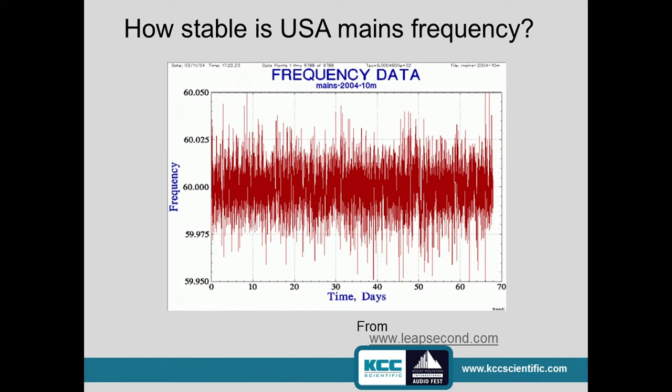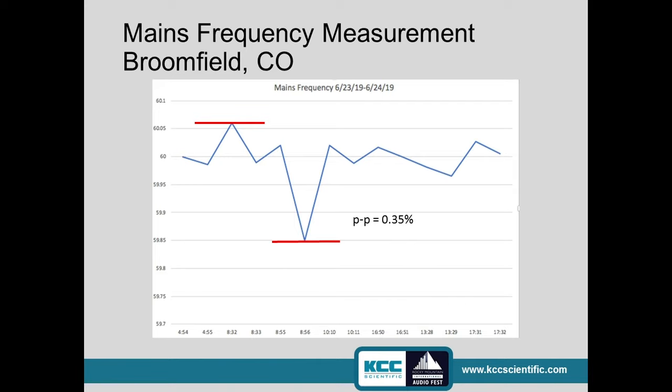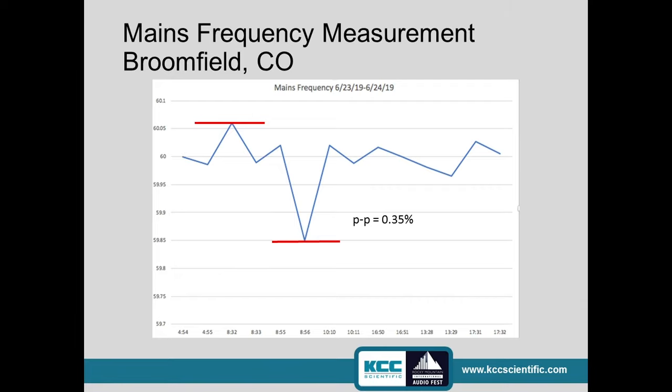So how stable is the frequency in the US? This data is taken from leapsecond.com, which monitored frequency over a period of several days — you can see the peaks and valleys for yourself. I took a few points in Broomfield, Colorado, and over about a 24-hour period I observed about 0.35% peak-to-peak change. That's noticeable. That's real speed change.